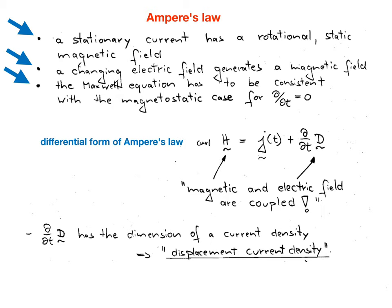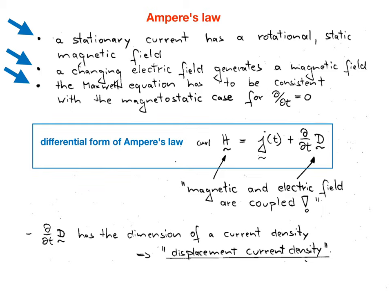Ampere's law also has to be consistent with the static case for which the partial differentiation d/dt equals zero. It reads: the curl of H equals the sum of current density J plus the partial differentiation with respect to time of the electric flux density D. Importantly, Ampere's law includes both the magnetic field and the electric field — one depends on the other, and we say magnetic and electric fields are coupled. The term d/dt of D, which is charge per time and area, has the dimension of current density and is therefore often referred to as displacement current density. This term was originally introduced on theoretical grounds by Maxwell.